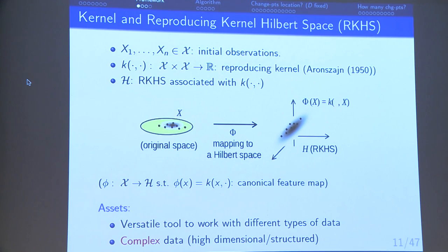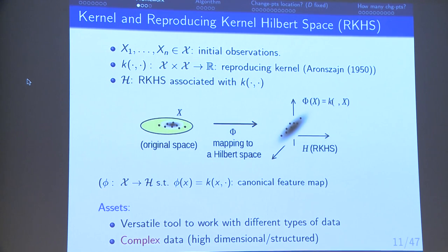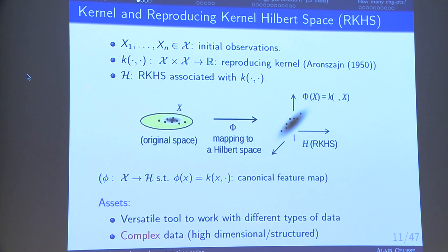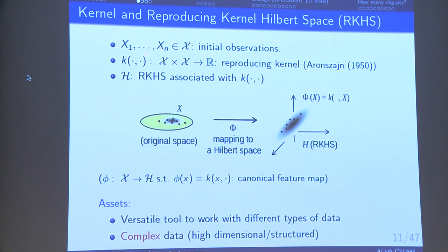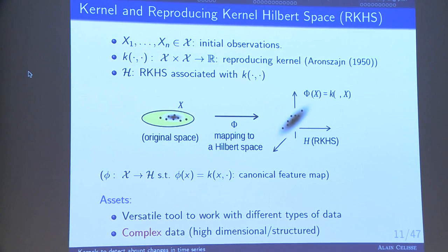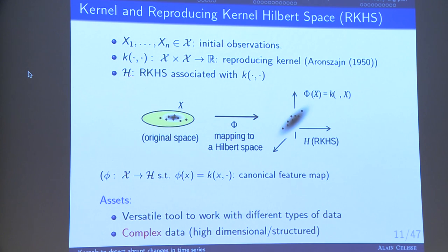How to do that? I first introduce the framework based on kernels. I assume that I observe independent and identically distributed observations x₁, …, xₙ in a given set X. This set has no particular structure. The only requirement is that I can define a positive semi-definite kernel K, which is a reproducing kernel in the sense introduced by Aronszajn in 1950. As long as you have such a kernel, you can have the associated reproducing kernel Hilbert space and also the canonical feature map φ defined this way.